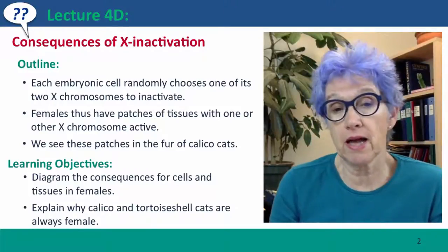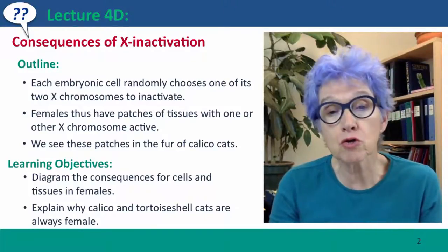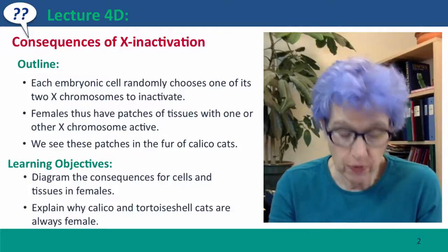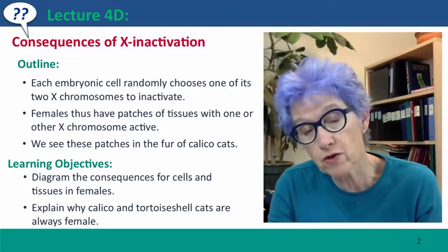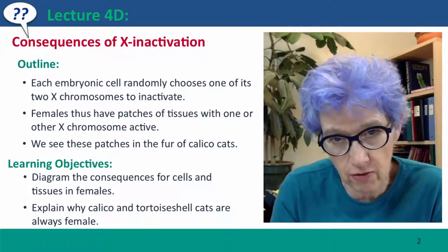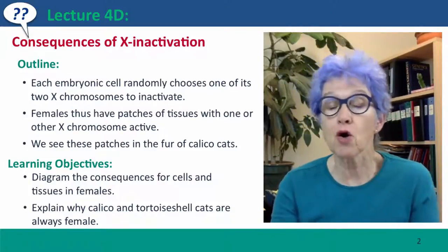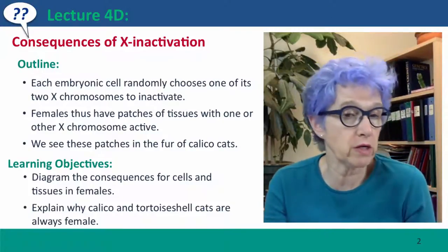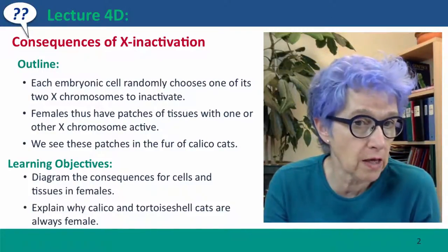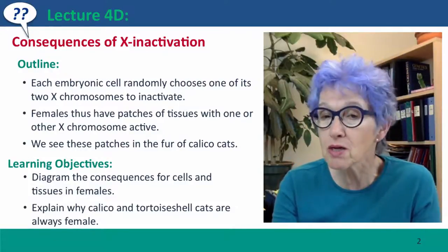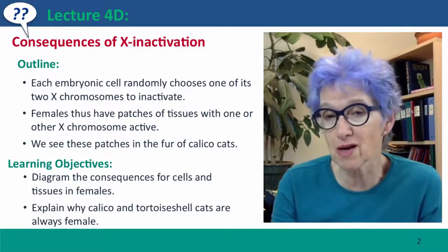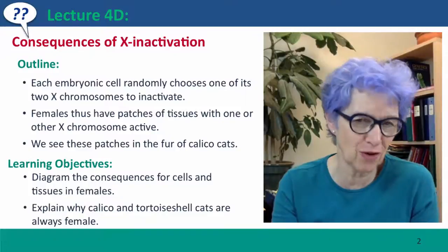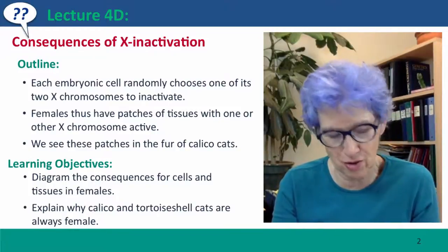Remember we said that X inactivation occurs early in development when each embryonic cell chooses one of its two X chromosomes to inactivate. A consequence is that we see patches of tissues with one or the other X chromosome active, and we particularly see this very clearly in the calico cats. It's nice to have an excuse to talk about cats on the internet.